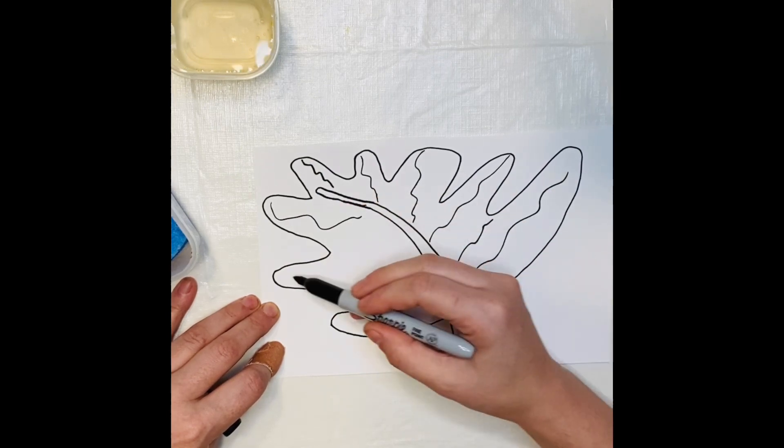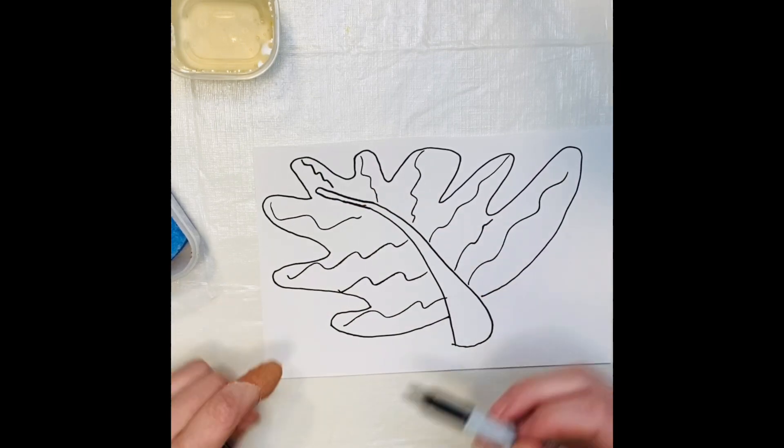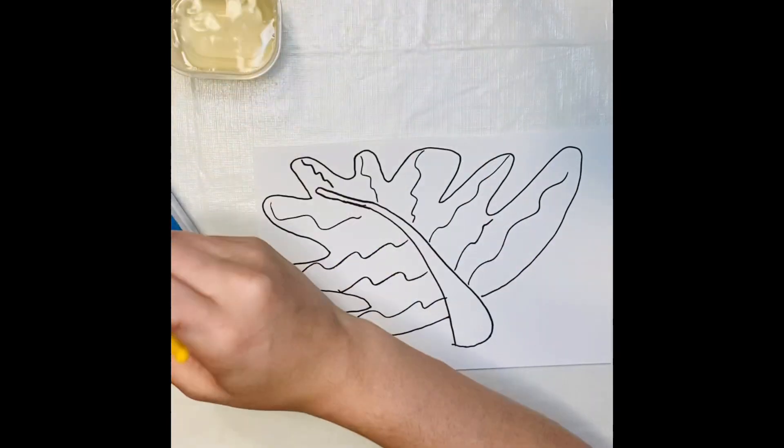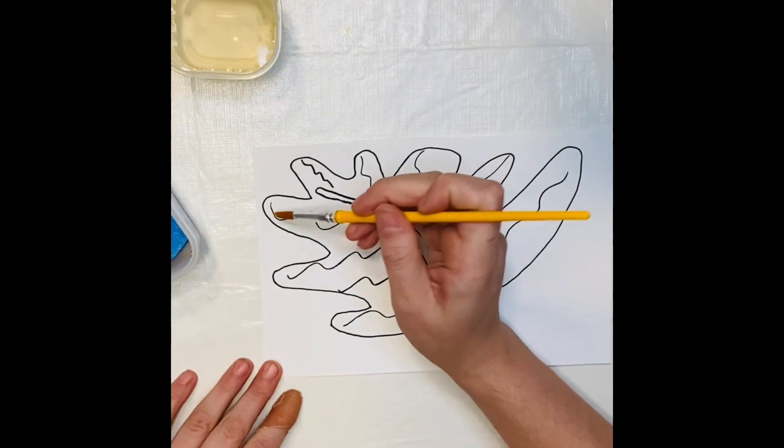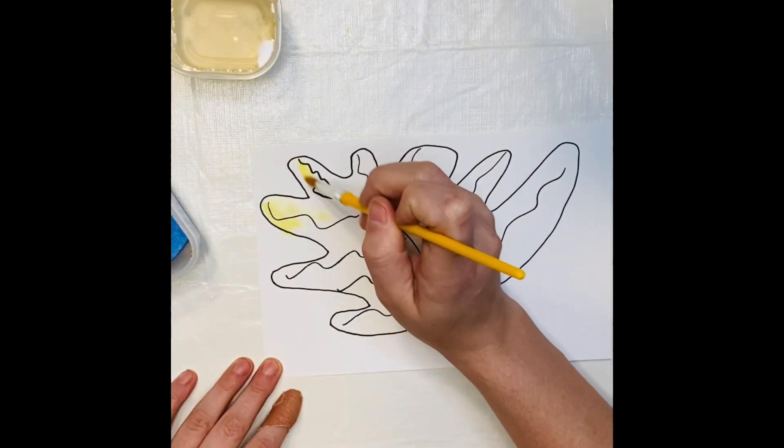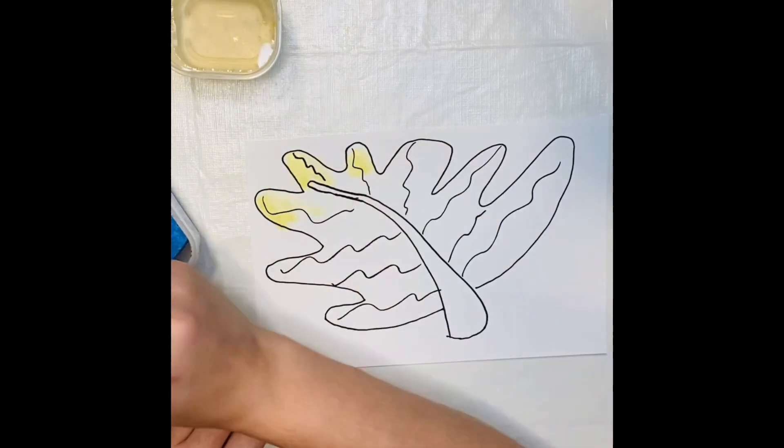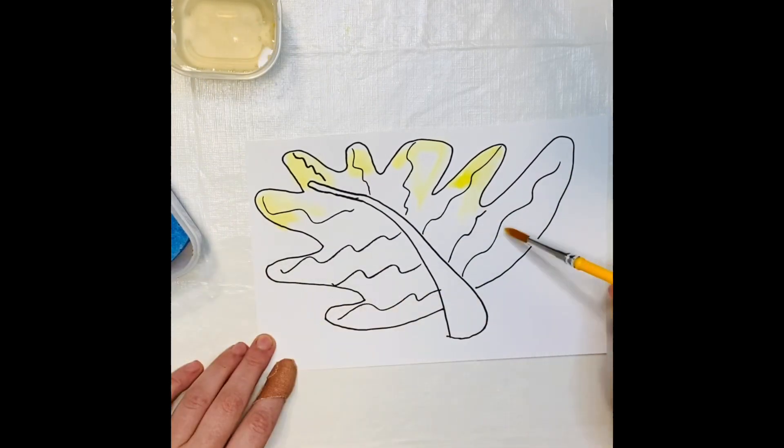Remember, there is no perfection in nature and everything looks different. I'm going to make some curved lines for my veins, and then I'm going to go in with my water and my watercolor paints. Remember, I'm starting on the border or the outside of my leaf and working my way in, starting with one color at a time.